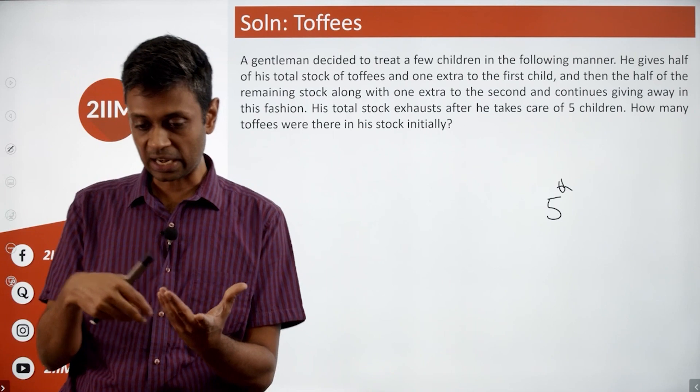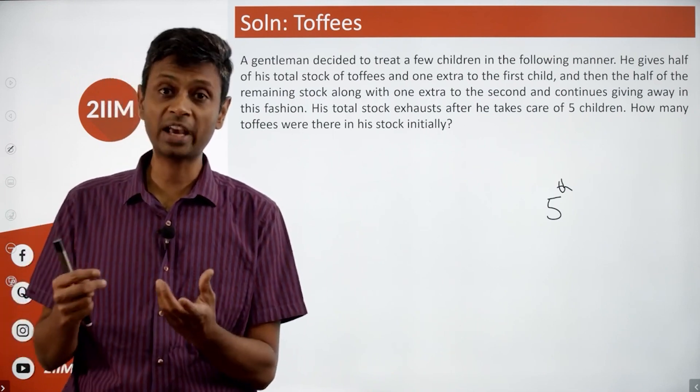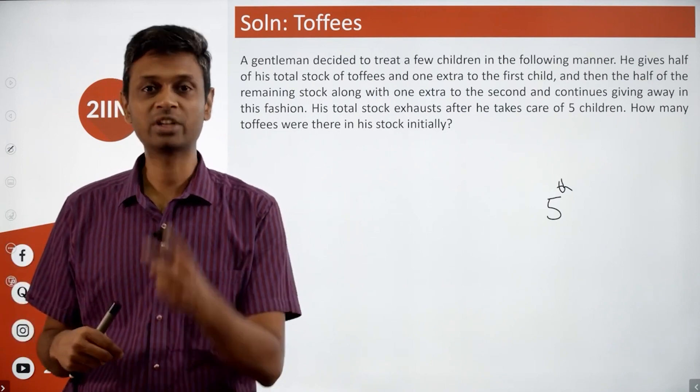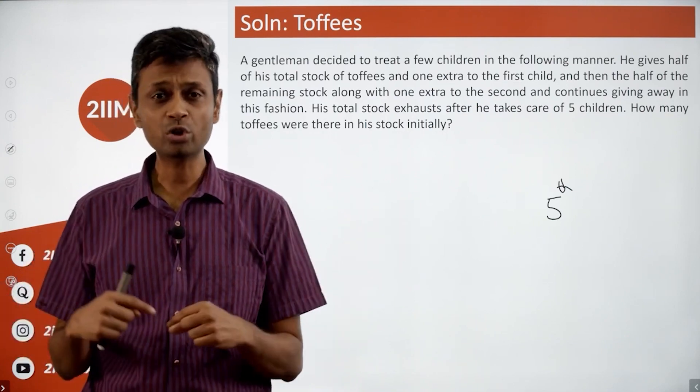Before he gives away the last one, he's given away half of what he had. That means half of what he had should be equal to this one. Or when he goes to the fifth kid, he should have had two. Half of two is one, plus one is two, he goes to zero. So when he goes to the fifth kid, he has two chocolates with him.